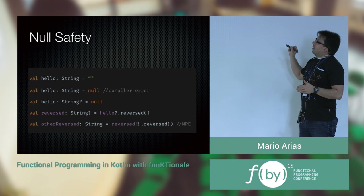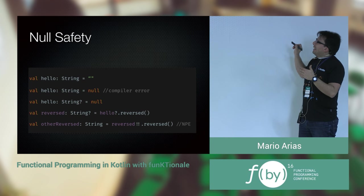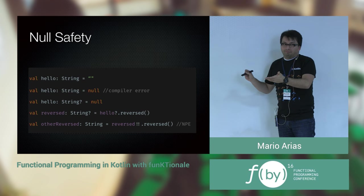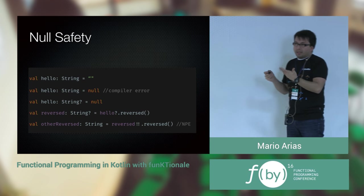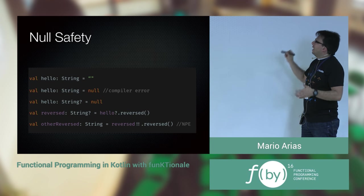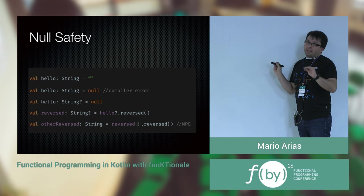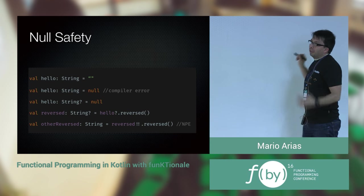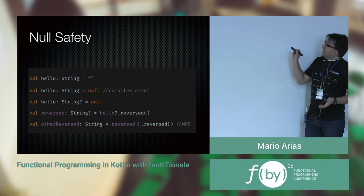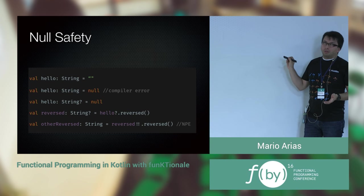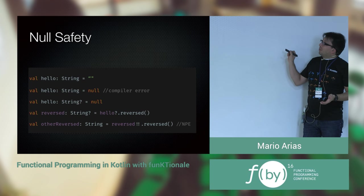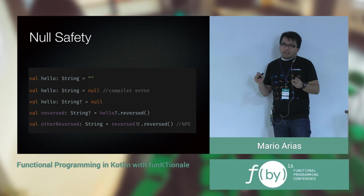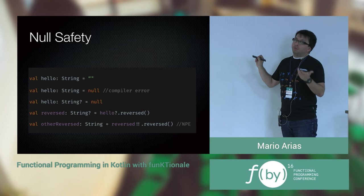You need to say: I know this could be null, and the compiler will return a value that could also be null — because if you operate on null values, you'll likely get a null result. Or you can use the double-bang operator (`!!`), which means: I know this is not null. The compiler says okay, but it will throw a NullPointerException at runtime if it actually was null. So, `?` to work safely with nulls, `!!` to assert non-null and get a non-null return value.